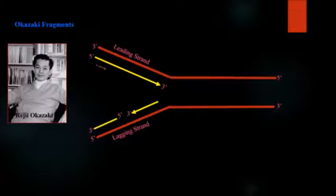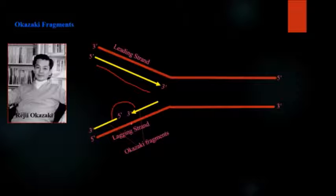In leading strand there is continuous formation or replication of DNA while in lagging strand there are brackets of strands and these strands are known as Okazaki fragments. In this way, DNA can synthesize itself in a particular direction, that is five-prime to three-prime direction.